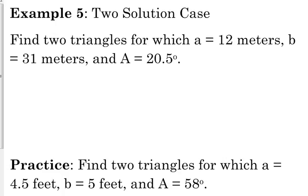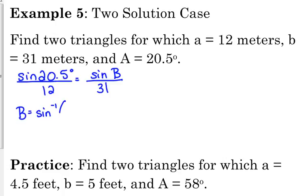All right, so let's set it up. We have the sine of 20.5 degrees over 12 is equal to the sine of angle B over 31. So that means that B is going to be equal to the sine inverse of 31 sine of 20.5 degrees over 12. I just kind of did all the steps that we did yesterday in one. Cross-multiply divides B as our angle, so we have to do the inverse trick.